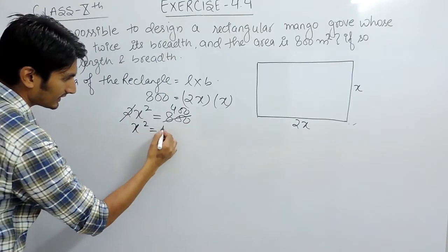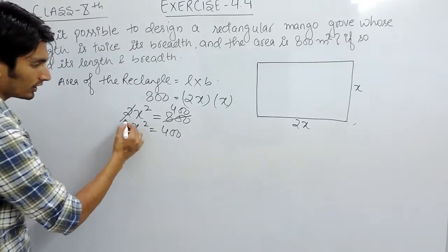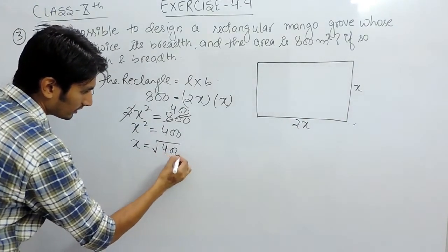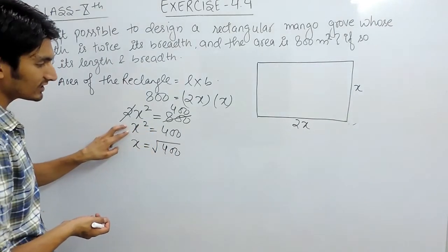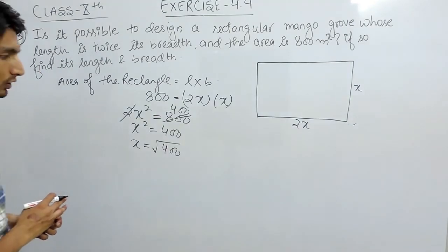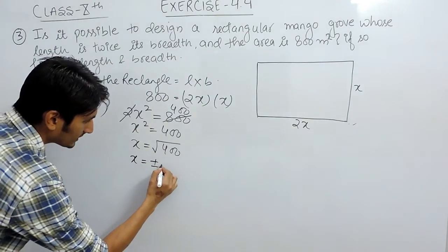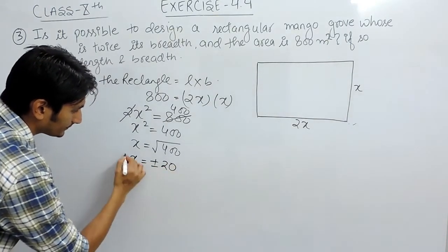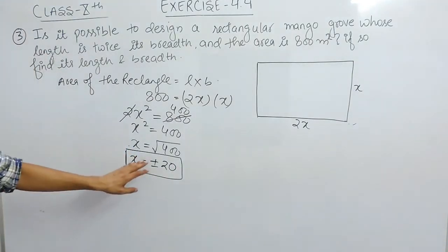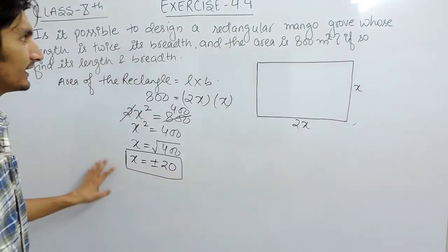So x² is basically 400. To find the value of x, we take the square root of both sides — the square root and square cancel on the left, and on the right the value of x is √400. So the value of x can be plus 20 or minus 20.